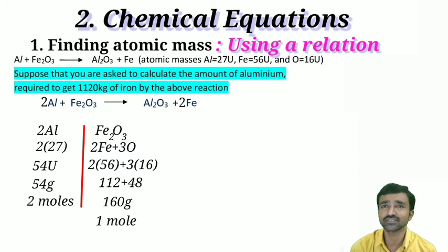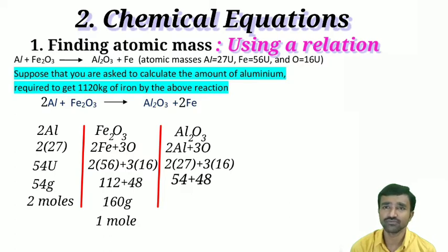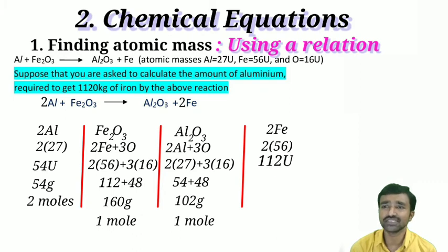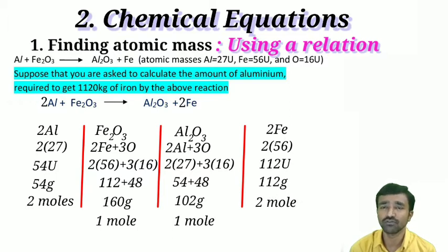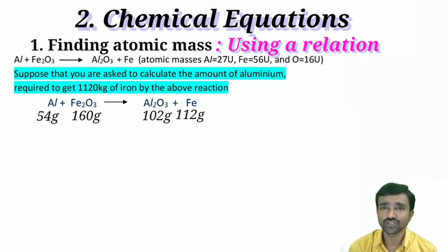For Al₂O₃: 2 × 27 + 3 × 16 = 54 + 48 = 102 grams (1 mole). For 2Fe: the coefficient is 2, so 2 × 56 = 112 grams (2 moles). Note these values below the compounds: 54, 160, 102, and 112.